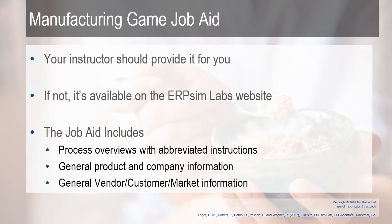The Manufacturing Job Aid is also available — typically a PDF, and I highly recommend that you print it. Your instructor should provide it; if not, it's on the ERP-SIM Labs website. It gives an overview with abbreviated instructions for how to get around, general product and company information, and general vendor, customer, and market information. It's not detailed — it's more of an aid that assumes you understand what's going on and just need a refresher.